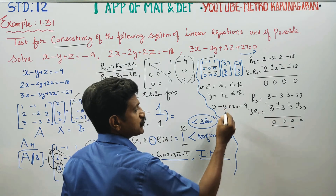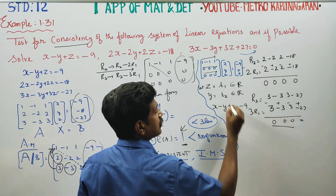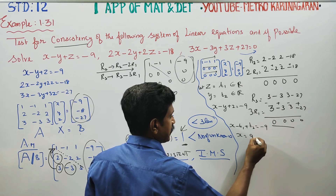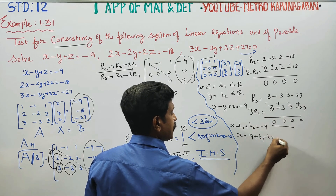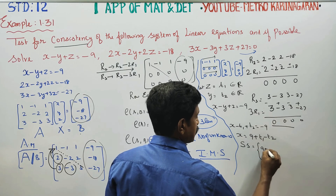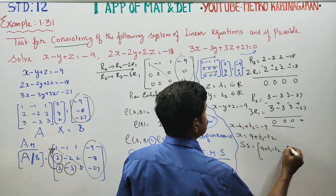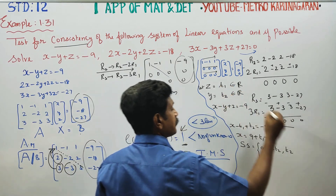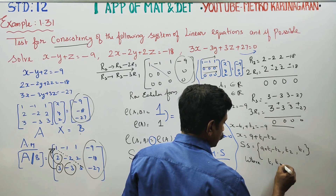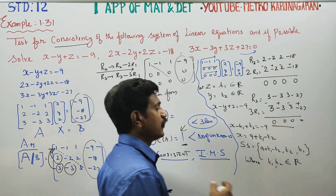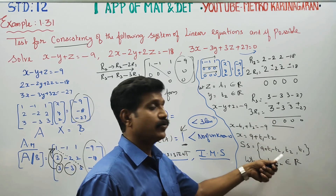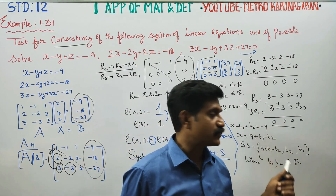Substituting y equals t1 and z equals t2 into x minus y plus z equals minus 9, we get x equals minus 9 plus t1 minus t2. Therefore the solution set is: x equals minus 9 plus t1 minus t2, y equals t1, z equals t2, where t1 and t2 belong to the real numbers — any real numbers. This gives infinitely many solutions.